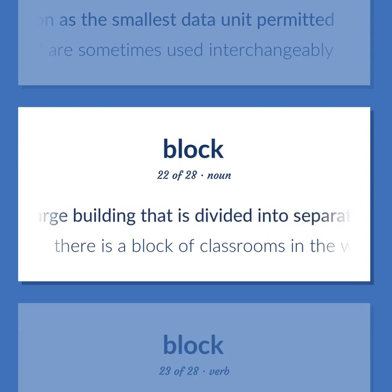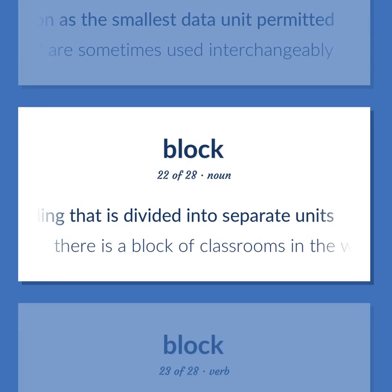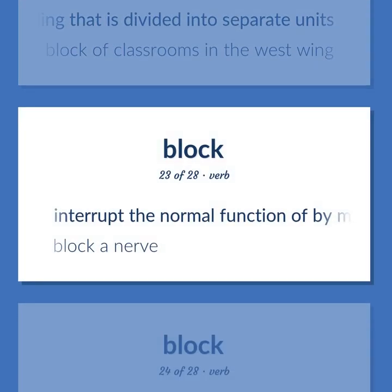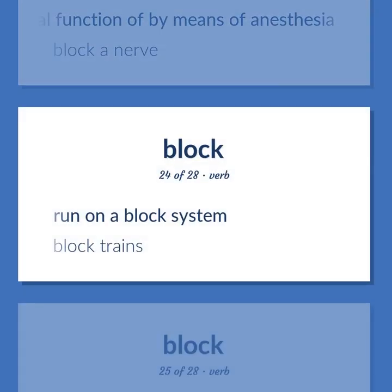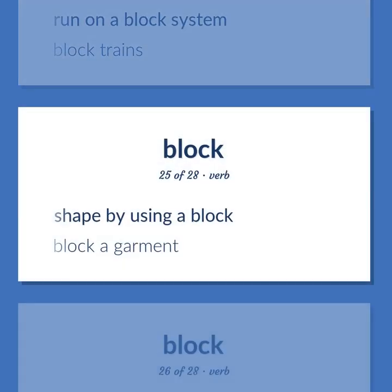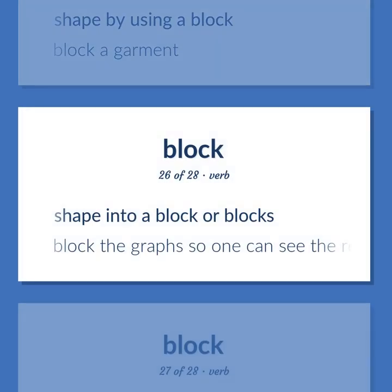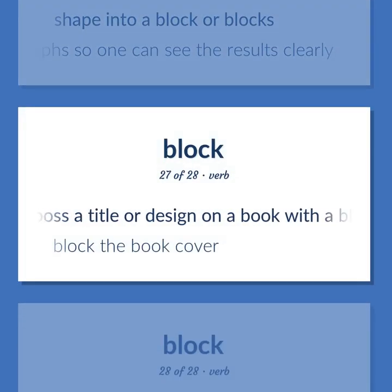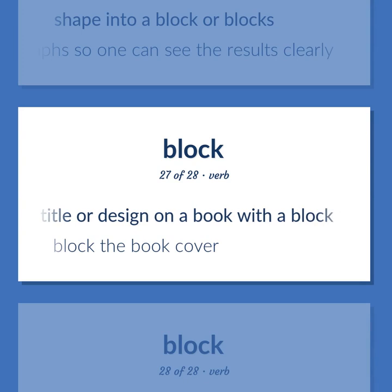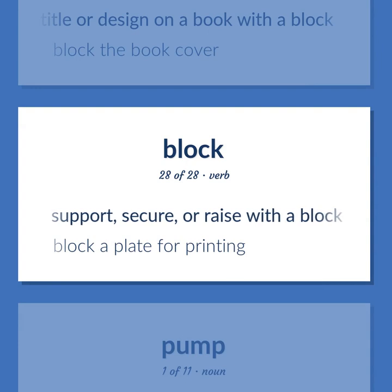Block (continued): a rectangular area in a city surrounded by streets and usually containing several buildings — he lives in the next block. Impede the movement of an opponent or a ball — block an attack. Hinder or prevent the progress or accomplishment of — his brother blocked him at every turn. A number or quantity of related things dealt with as a unit — he reserved a large block of seats. A solid piece of something, usually having flat rectangular sides — the pyramids were built with large stone blocks. Computer science: a sector or group of sectors that function as the smallest data unit permitted — block and sector are sometimes used interchangeably. Housing in a large building divided into separate units — there is a block of classrooms in the west wing. Interrupt the normal function of by means of anesthesia — block a nerve. Shape using a block — block a garment. Stamp or emboss a title or design on a book with a block — block the book cover. Support, secure, or raise with a block — block a plate for printing.